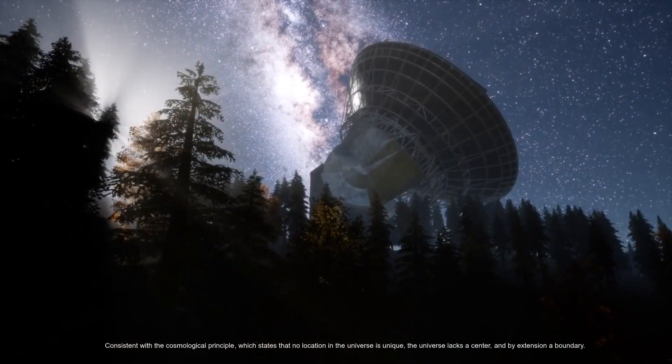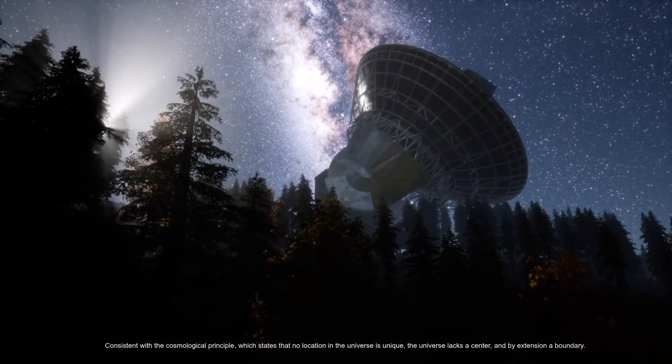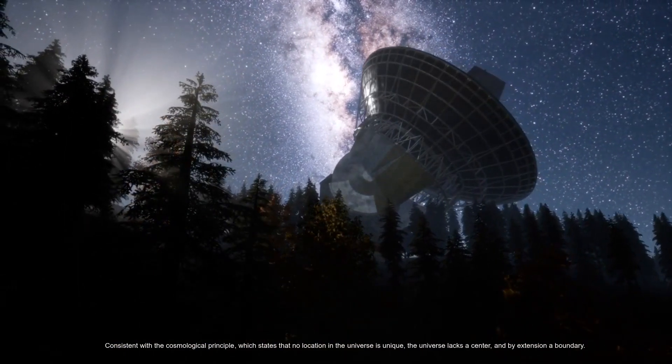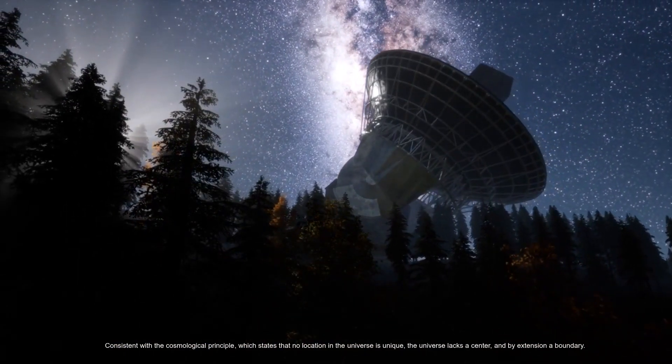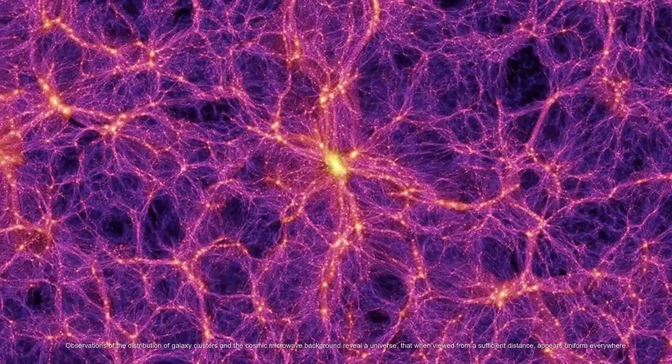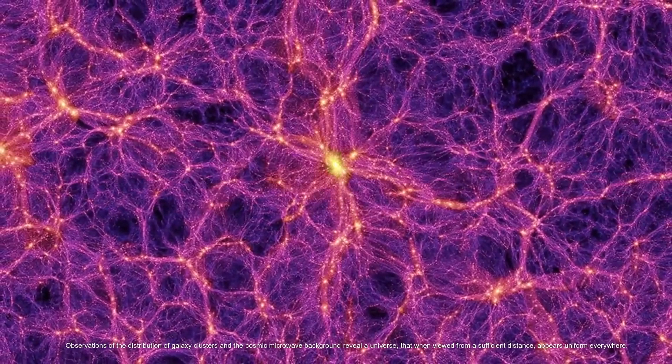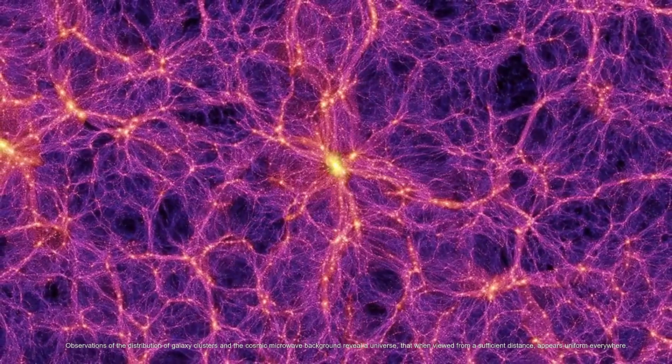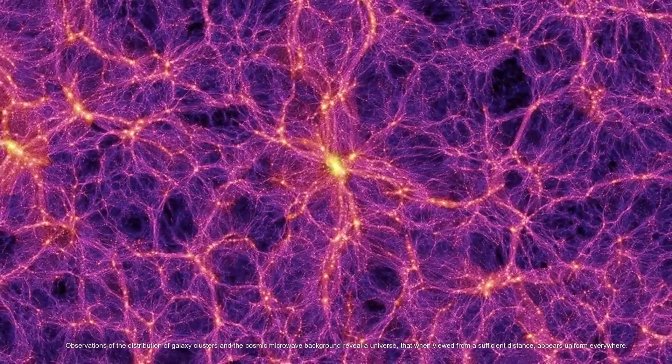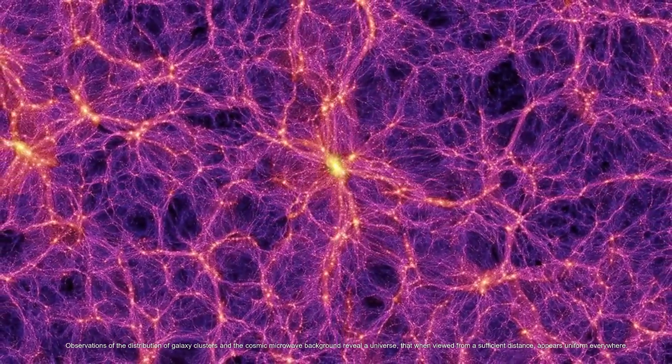Consistent with the cosmological principle, which states that no location in the universe is unique, the universe lacks a center, and by extension a boundary. Observations of the distribution of galaxy clusters and the cosmic microwave background reveal a universe that when viewed from a sufficient distance, appears uniform everywhere.